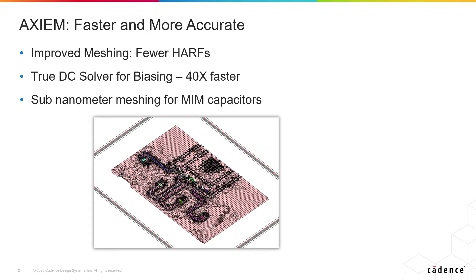Finally, we have improved the vertical stack-up — the ability of Axiom to see layer thicknesses down to sub-nanometer, which is absolutely critical for MIM capacitors. You need to include accuracies up to sub-nanometer or you'll get an incorrect capacitance value. In V15 with Axiom, it will accurately get the capacitance.